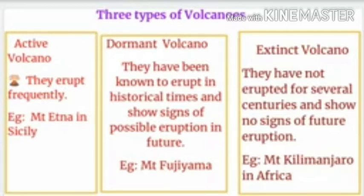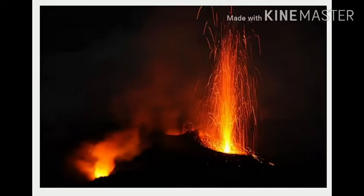At present, it is believed that there are 500 active volcanoes. About 20 of these volcanoes may erupt at any time. A few of them are in a state of permanent eruption. For example, Mount Stromboli in the island of Sicily is named as the Mediterranean Lighthouse because of its nature of continuous eruption.